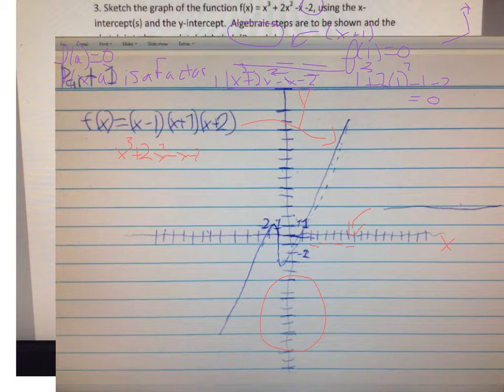But we have certain points. We have the x-intercepts, this point, this point, and this point, which are not negative 2, negative 1, and 1. Those are not points. Those are just numbers. This point is 1, 0. This point is minus 2, 0. And this point is minus 1, 0. So we need to have those labeled on our graph.